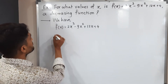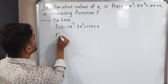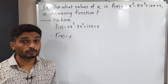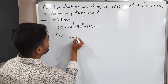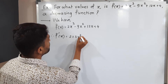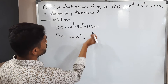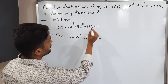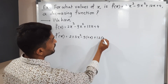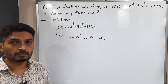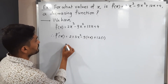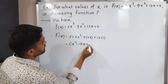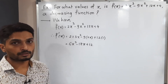Let us find f'(x). 2 is constant. Derivative of x³ is 3x², minus 9 — 9 is constant — derivative of x² is 2x, plus 12. Derivative of x is 1 and 4 is constant so its derivative is 0. So we have 6x² minus 18x plus 12. This is the derivative of the function.